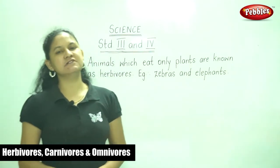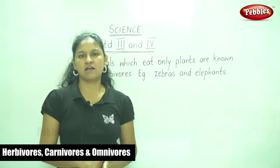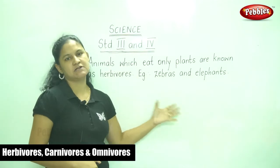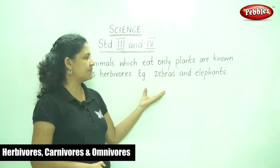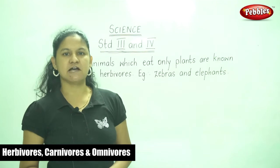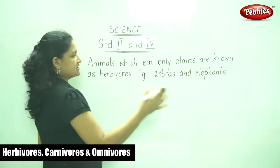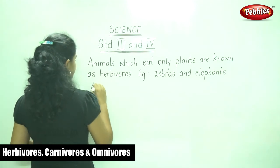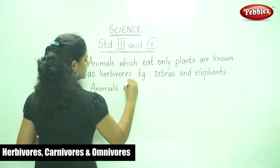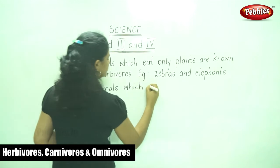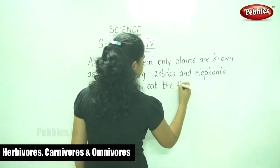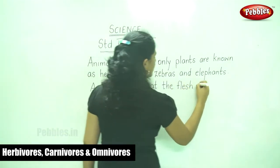Based on its eating habits, animals can be classified as herbivores, carnivores, and omnivores. Animals which eat only plants are known as herbivores. Examples are zebras and elephants. The next type is animals which eat the flesh of other animals.